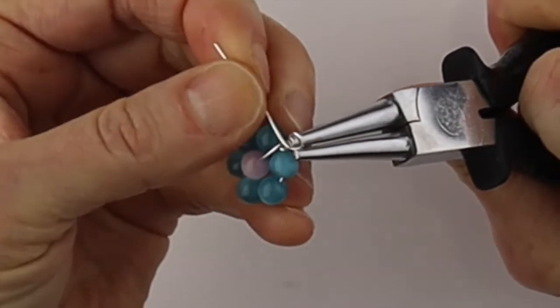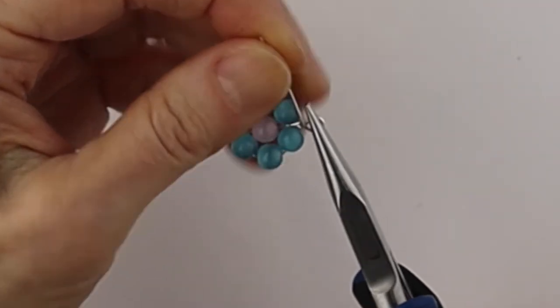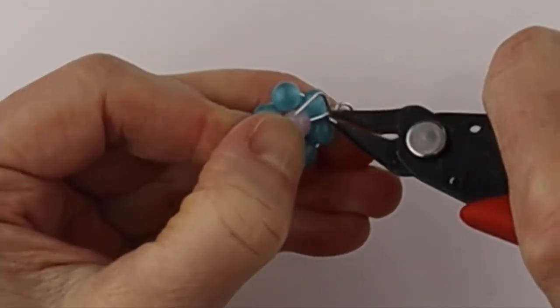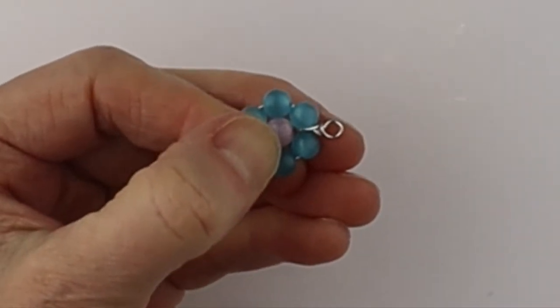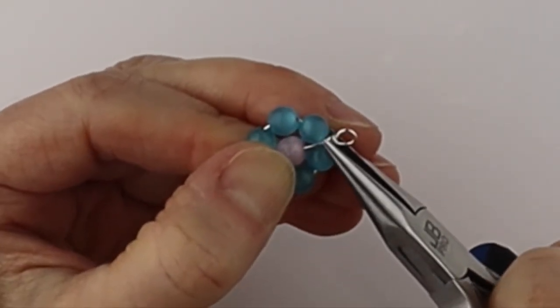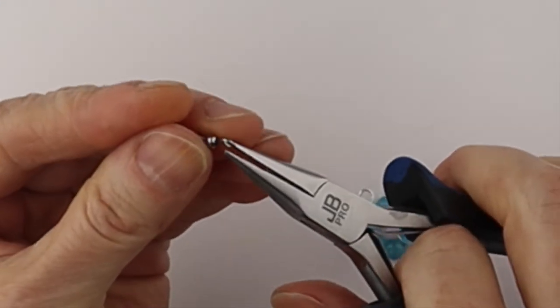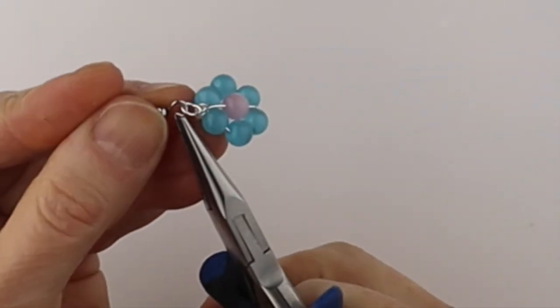Now hold it in place with the flat pliers and wind the end around one full turn and clip it flush. After that, you'll get your flat pliers again to pinch in that little pokey end. Get an earring hook, open it up, and place the daisy on the hook.